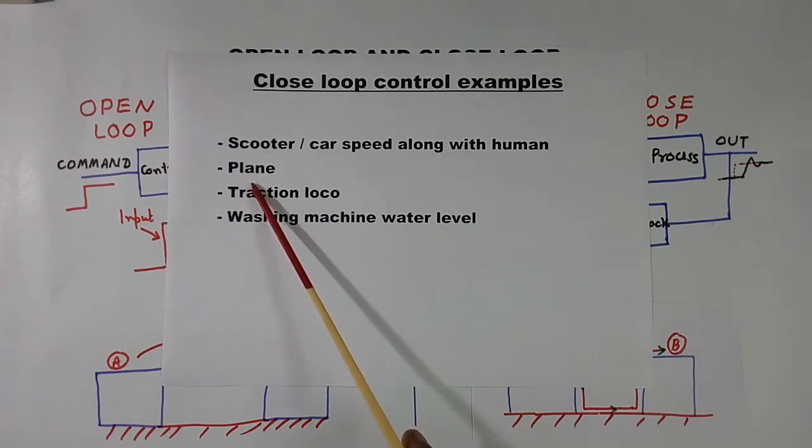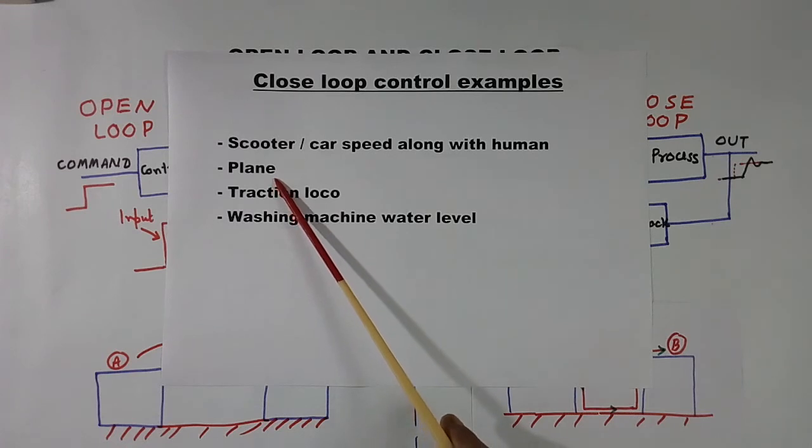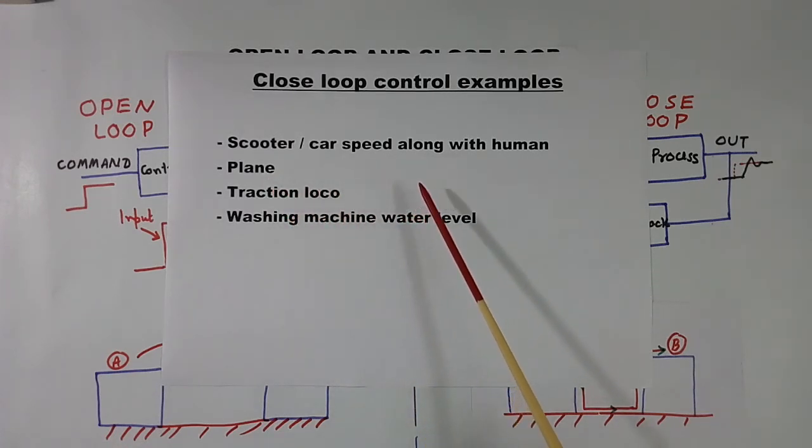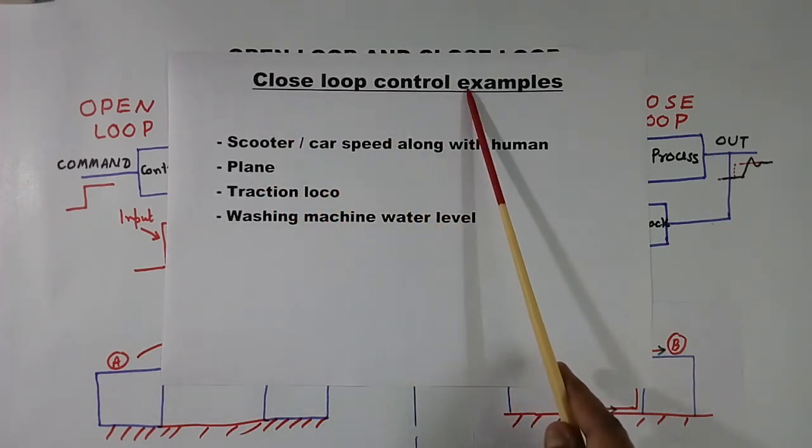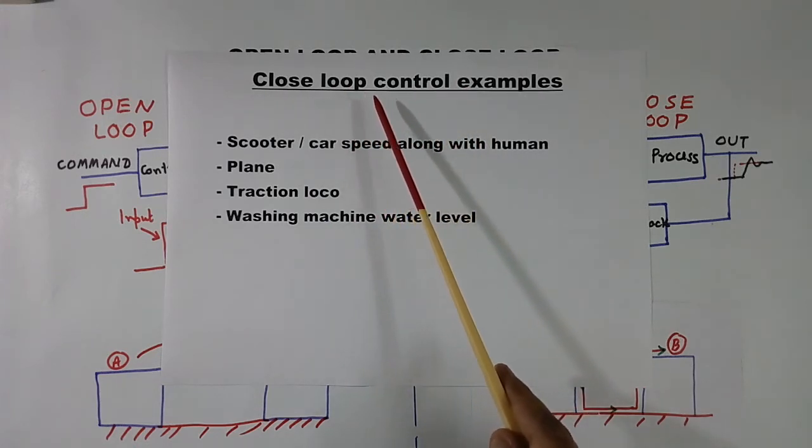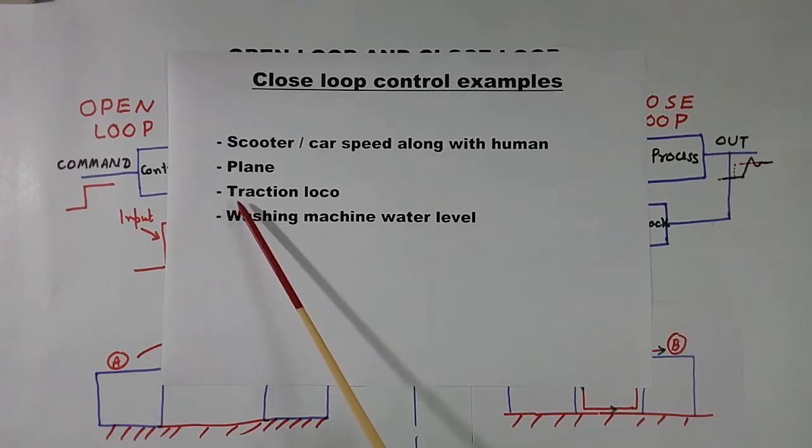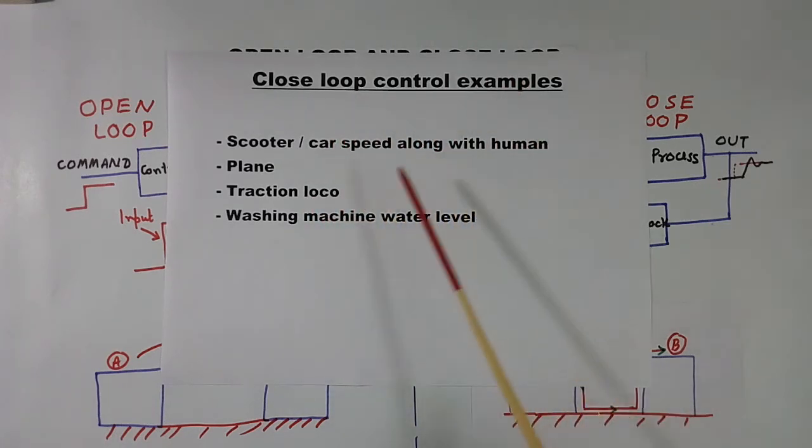Similarly plane. Plane you know many times, pilot will keep plane in auto mode. And plane will sense automatically height and speed will be working automatically. So very good example of closed loop control system. But plane will be having many open loop control also inside. Traction loco I told just now, traction loco has complex, high accuracy open loop system. They have closed loop control system also.